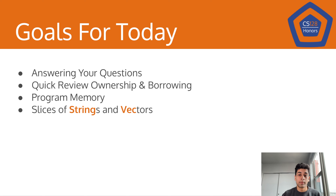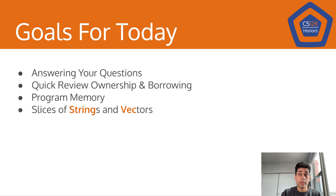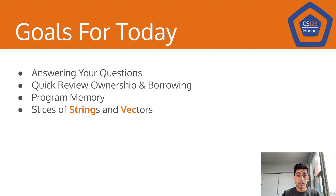Then I'm going to do a quick review of ownership and borrowing, then start talking about program memory and how your computer interacts with your code, how that interacts with RAM and all of the other low-level details of your computer. And at the end, this is all to set up strings and vector slices — how we access subcomponents of strings, why we need to borrow certain things, and what borrowing actually does under the hood.